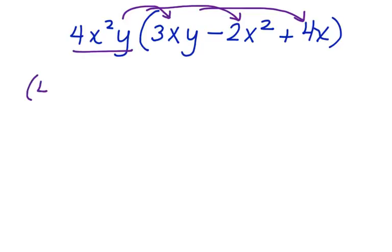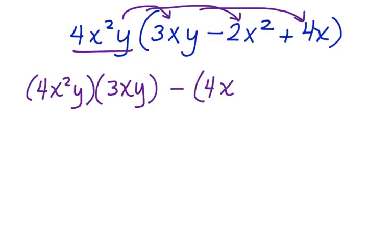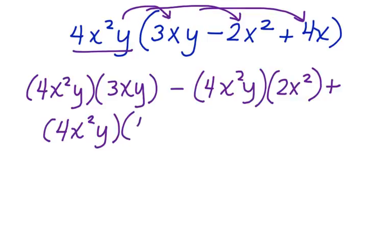So we can say 4x squared y times 3xy minus 4x squared y times 2x squared plus 4x squared y times 4x.